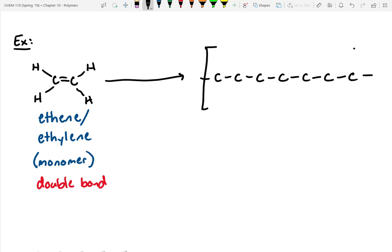And then to indicate that this can go on forever, what we do is we bracket it, and then we put some sort of symbol down here, sometimes n, to indicate that this can be any number of units. In addition, all of the hydrogens that were on the monomer are still there. It can be any repeating number of units.